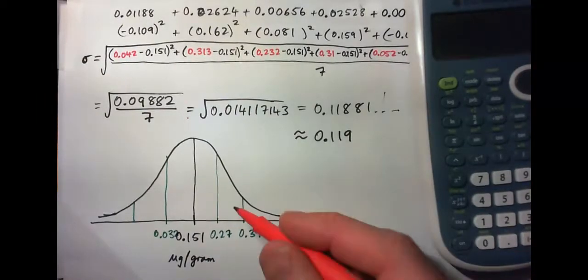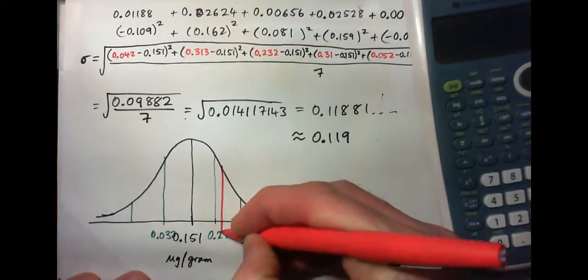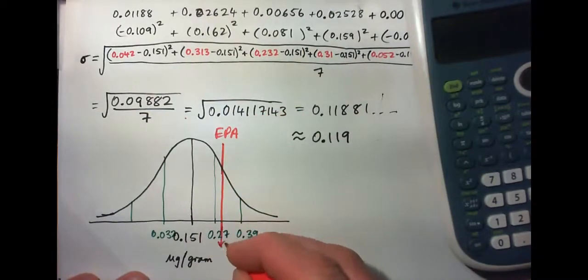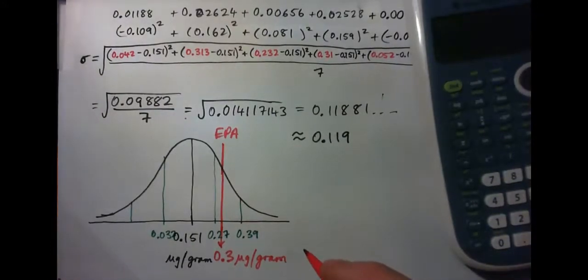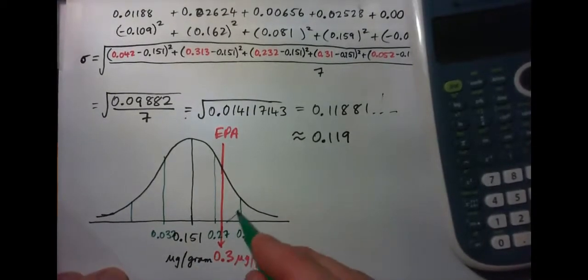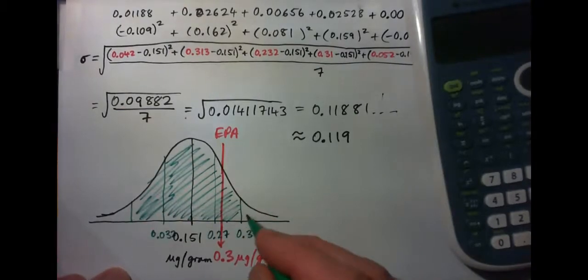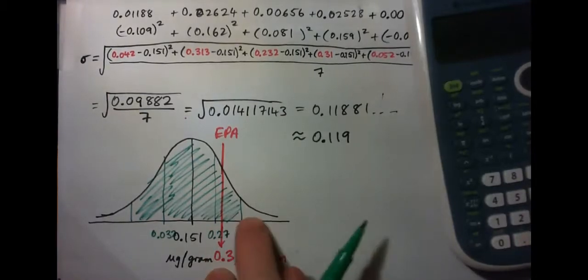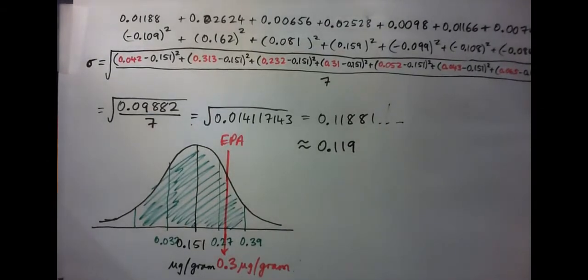We can see that some of the fish is definitely going to be in the danger level, which, as we saw, the danger level, according to the EPA, was 0.3 micrograms per gram. So, we can see that our 95% of fish is about in this range, and so we've got a significant amount above the safe level for this type of fish.